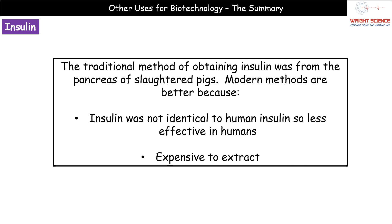The second example we need to know about is insulin production. Prior to modern techniques, insulin was obtained by taking the pancreas of slaughtered pigs and extracting it from there. Obviously some people have issues with insulin from pig pancreases — certain religions would object, as would vegetarians. Modern biotechnology methods are better because we are now creating human insulin, not pig insulin, making it more effective. It also used to be expensive to extract from pig pancreases, whereas we now have a much cheaper process.